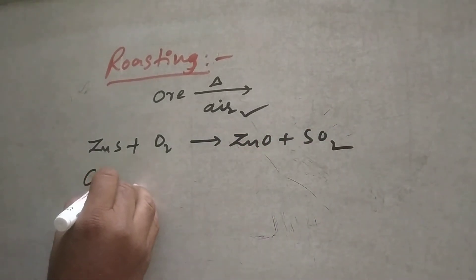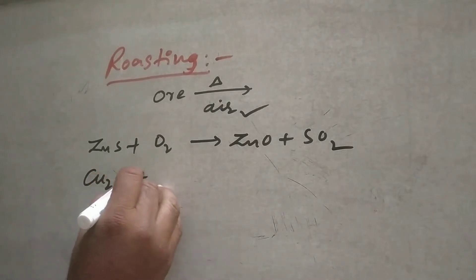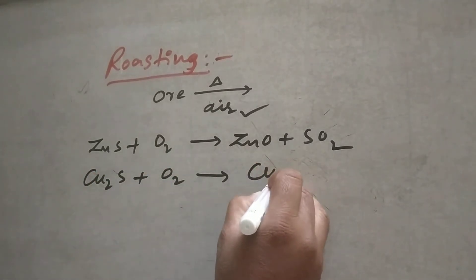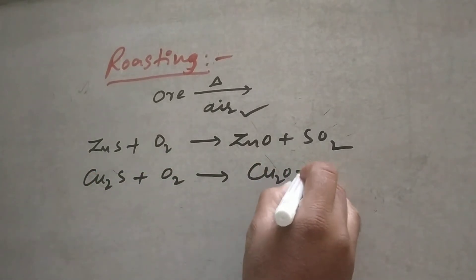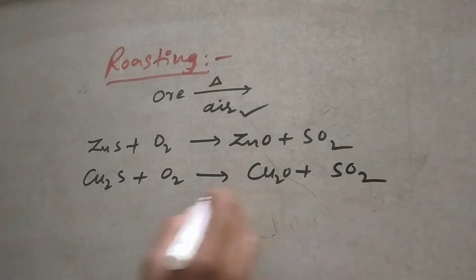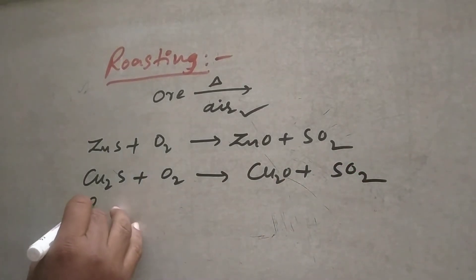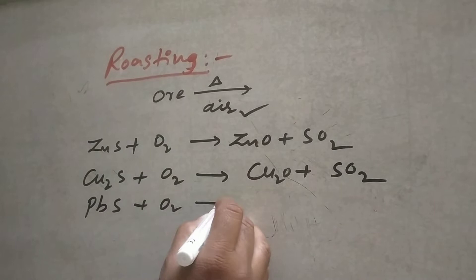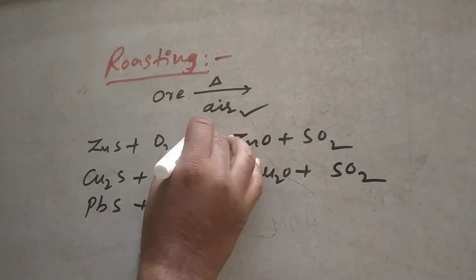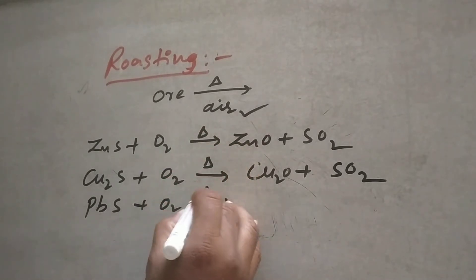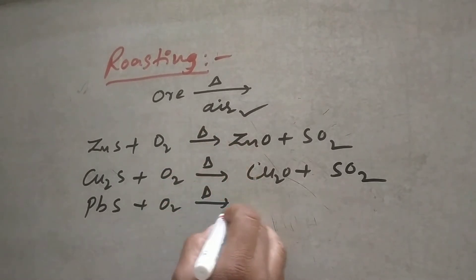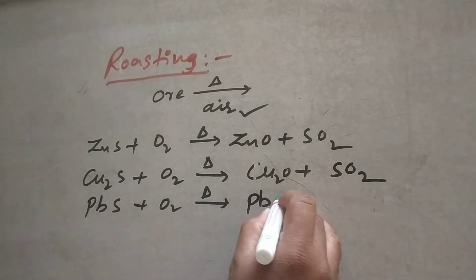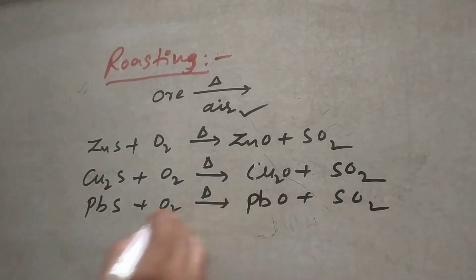Suppose Cu2S plus oxygen is heated — you get Cu2O plus SO2. Similarly, lead sulfide in the presence of oxygen, on heating, gives PbO plus sulfur dioxide.